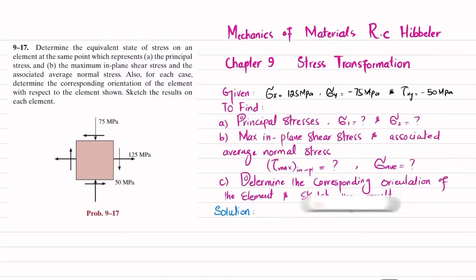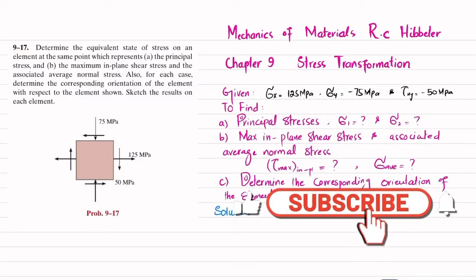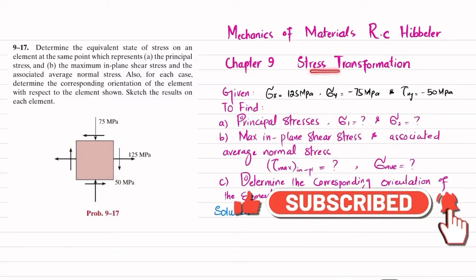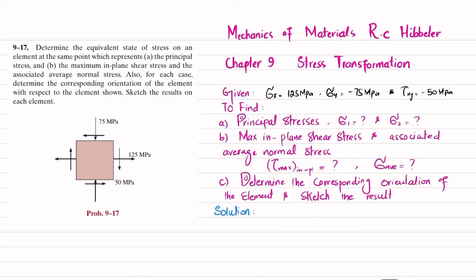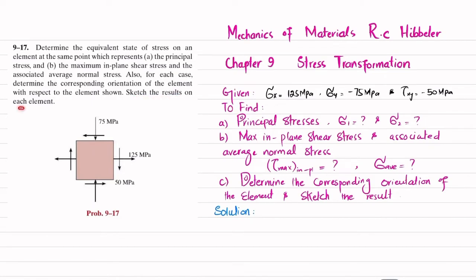Welcome back. Problem 9-17, taken from Chapter 9, Stress Transformation, from the book Mechanics of Materials by R.C. Hibbeler. The problem statement is: determine the equivalent state of stress on the element at the same point which represents the principal stress, and in part B, the maximum in-plane shear stress and associated average normal stress. For each case, determine the corresponding orientation of the element with respect to the element shown, and sketch the result on the element.